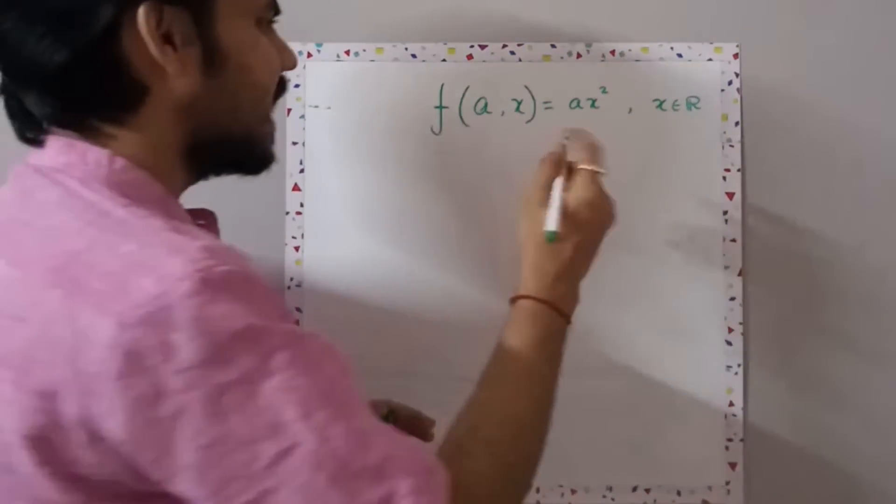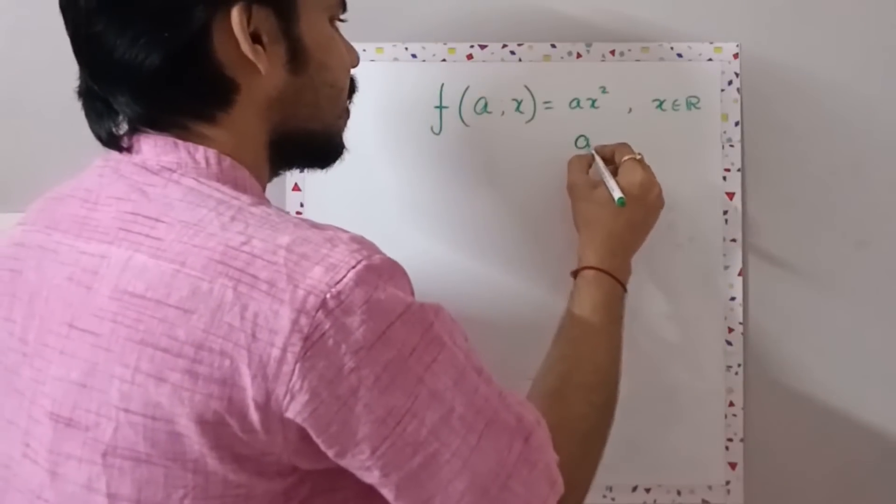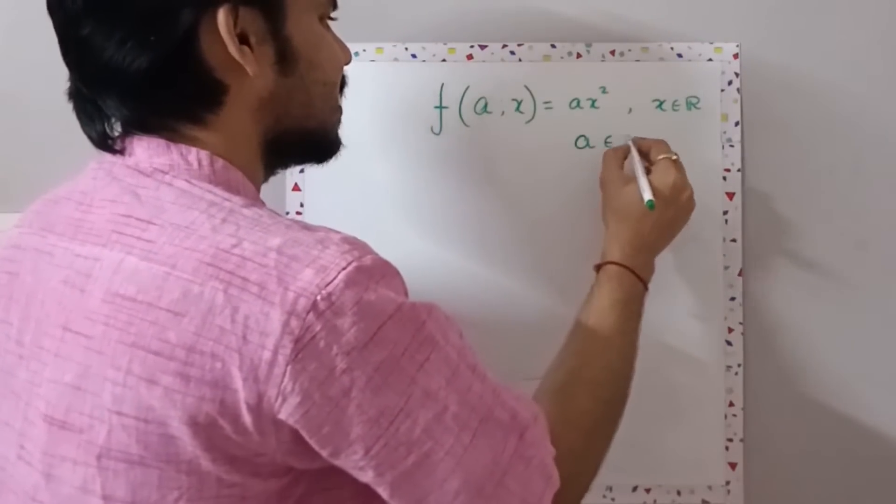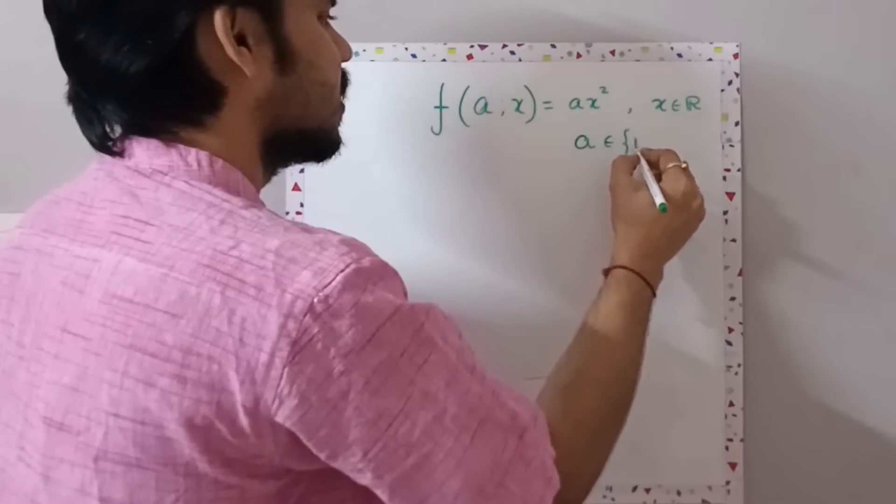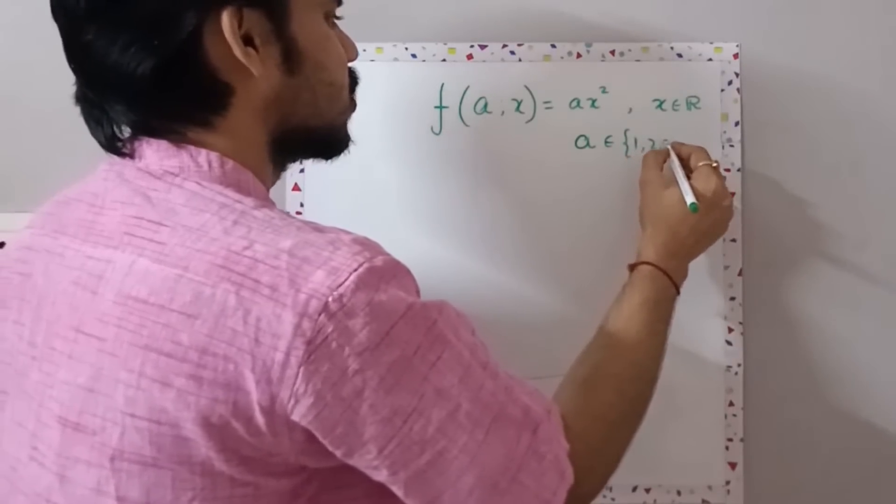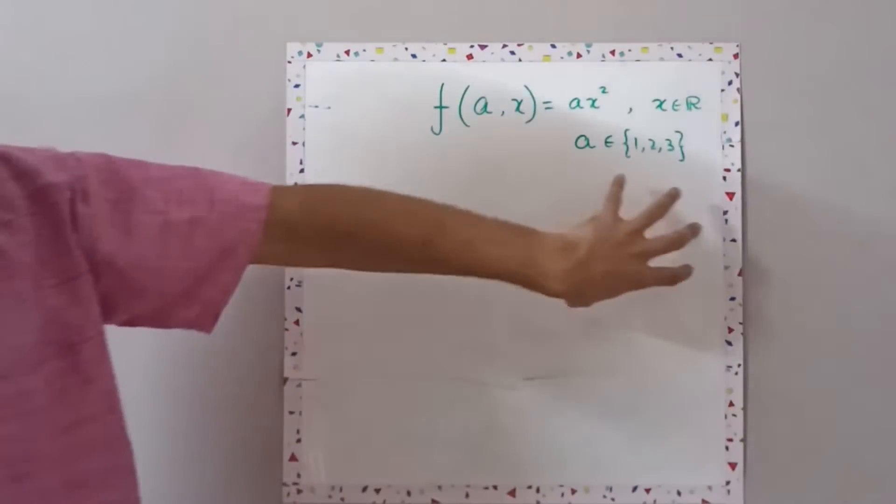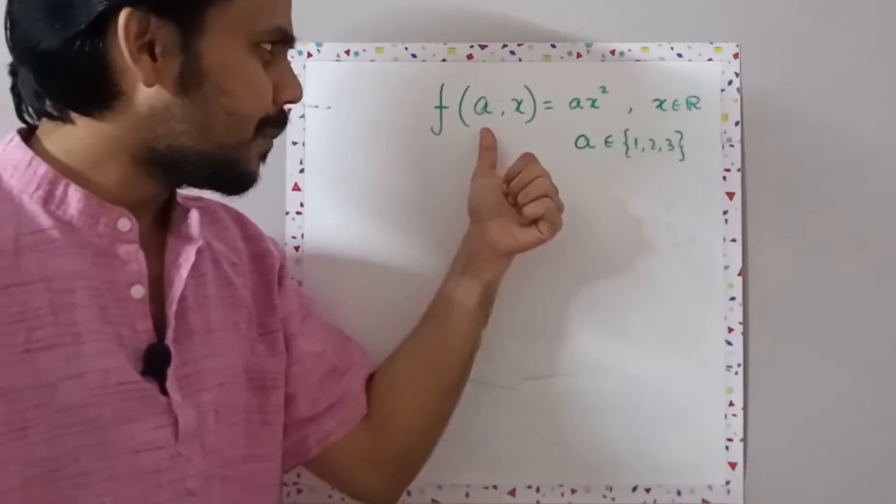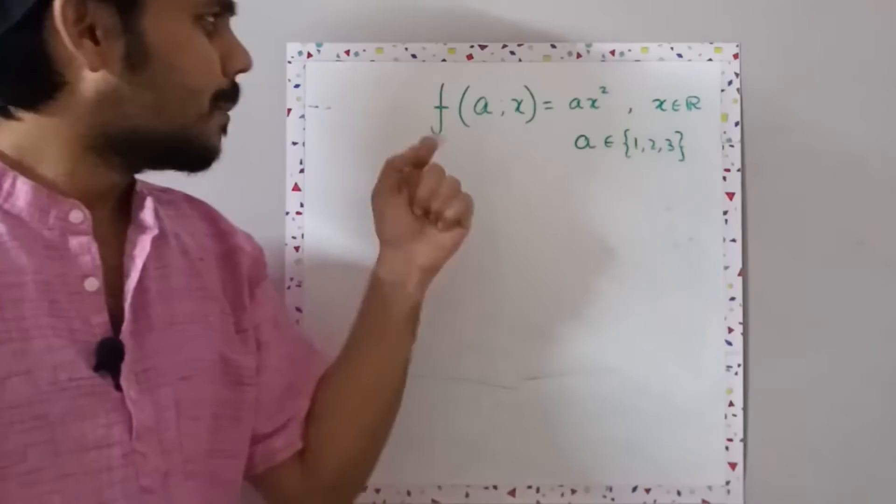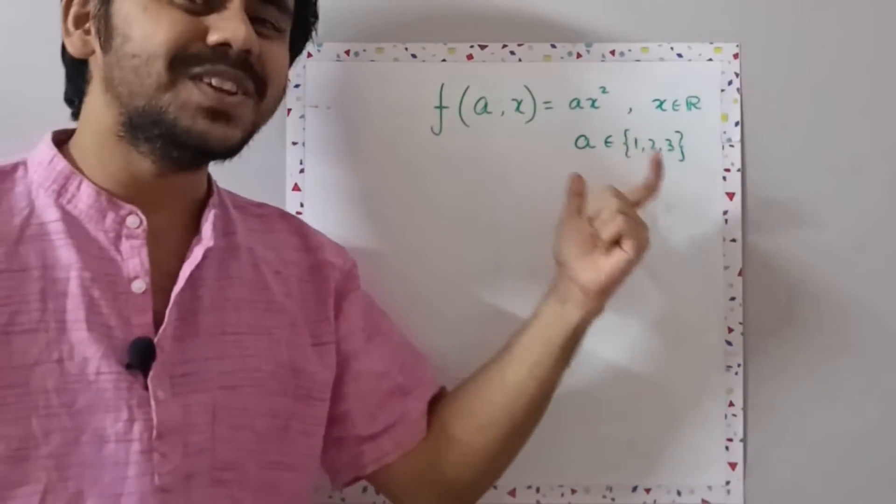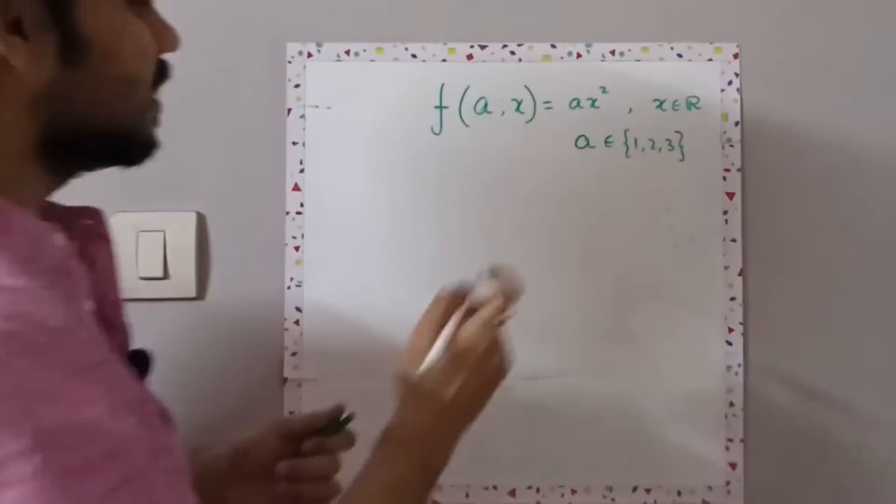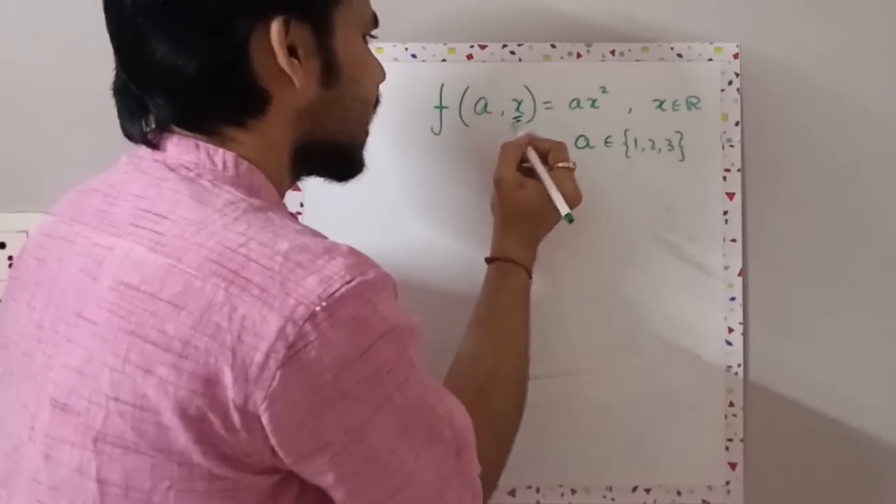When I say that a is a parameter, what I mean is that a can take values—let's say it can take values between 1, 2, 3. I will change a and my function will change, but a over here is not really a variable; my variable is x.